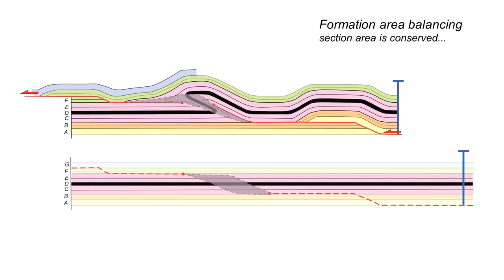So this is formation area balancing. We are assuming that the cross-sectional area of all our units in this particular case though as illustrated with layer C and E is conserved during the deformation. And we would then match the cross-sectional area and unravel it to the restored length of that of the keybeds in this case unit D.